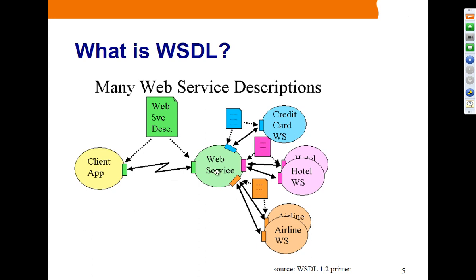A web service could also communicate with other web services, such as credit card, hotel, or airline web services. In that case, one service plays the role of web service client to another. Any communication between a web service client and service provider must be specified in a WSDL document — there has to be one WSDL document per client-server communication as a service contract.